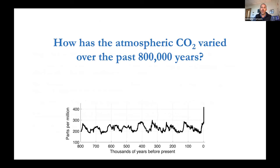I plotted up a record of carbon dioxide covering almost the last million years. Most of it comes from ice cores from Antarctica that trap little air bubbles recording the amount of carbon dioxide. You can see the up and down over time — the glacial-interglacial cycles from 800,000 years ago.